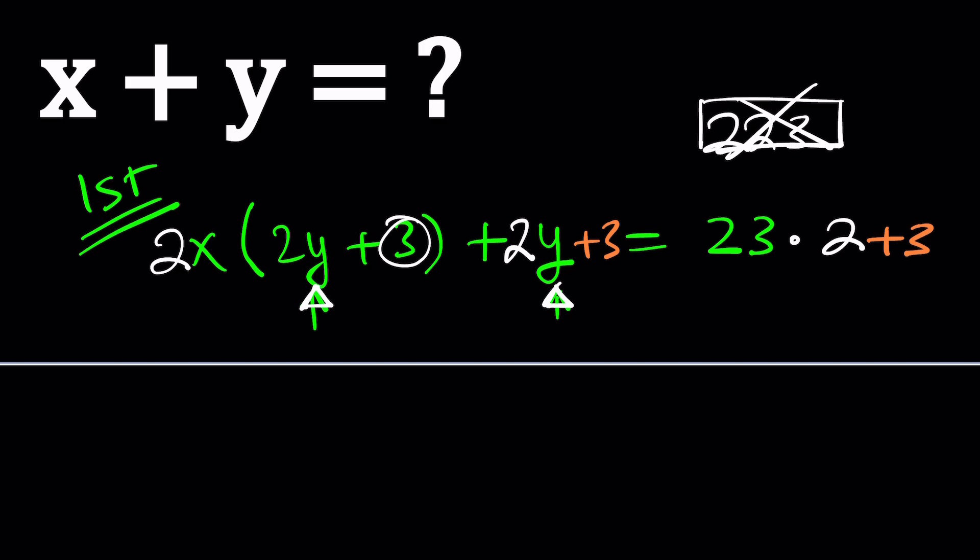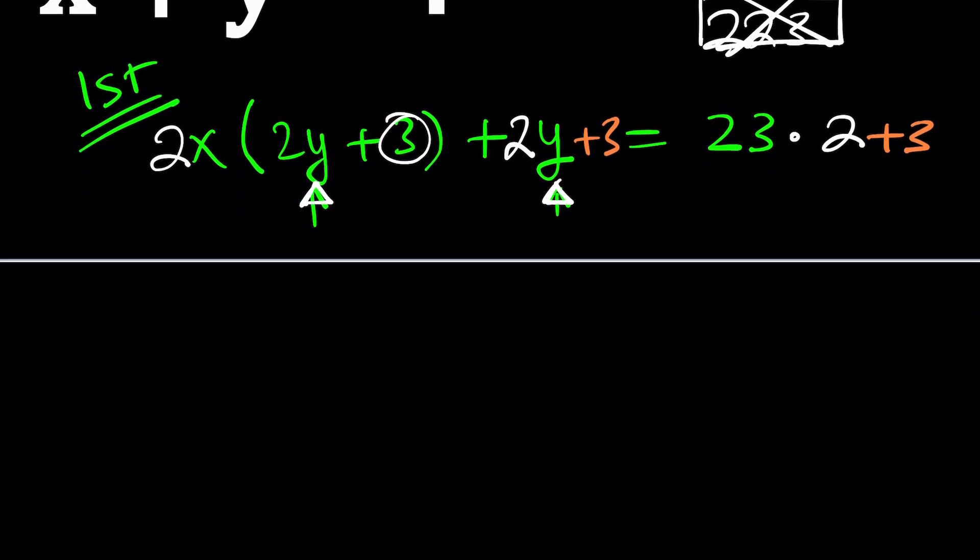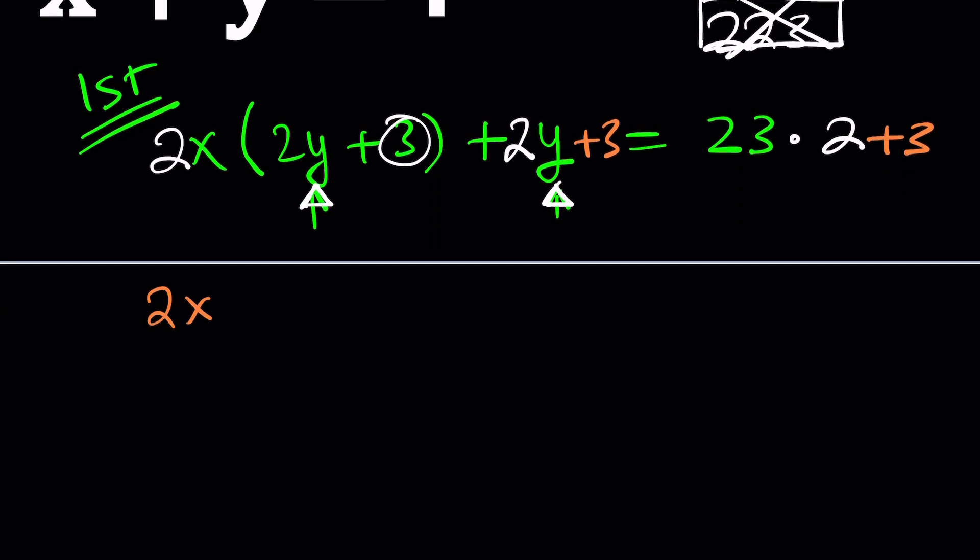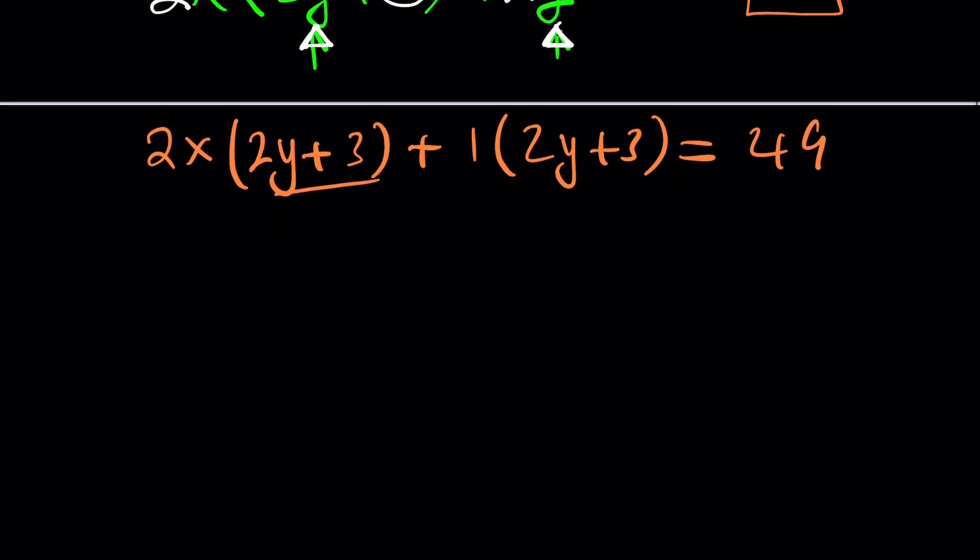You see, in two easy steps, we make this equation manageable or factorable. Now, you might be questioning, what is the common factor? It is 2y + 3. But what does it multiply by here? By 1. If there's nothing that multiplies it, it's 1. But what is this? 46 + 3 is 49, as far as we know. Now take a look. This is a common factor. We can pull it out. 2y + 3. And then the other one becomes 2x + 1 equals 49.